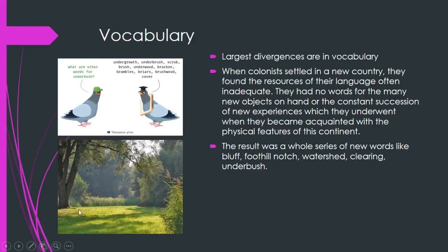Another word is underbush, which refers to a small undergrowth. There are certain other words for underbush like undergrowth, underbrush, scrub, brush, underwood, bracken, brambles, briars, brushwood, and cover — all referring to small growth in a wooded area. In this new continent, these colonists experienced new objects and new experiences. They did not have words in British English to refer to these objects and experiences, so new words were coined.